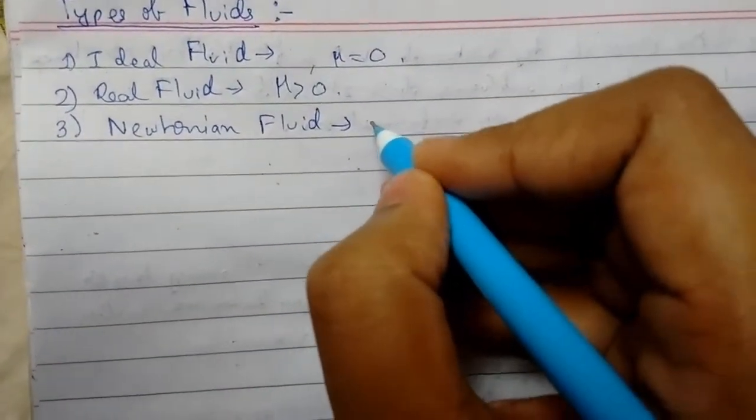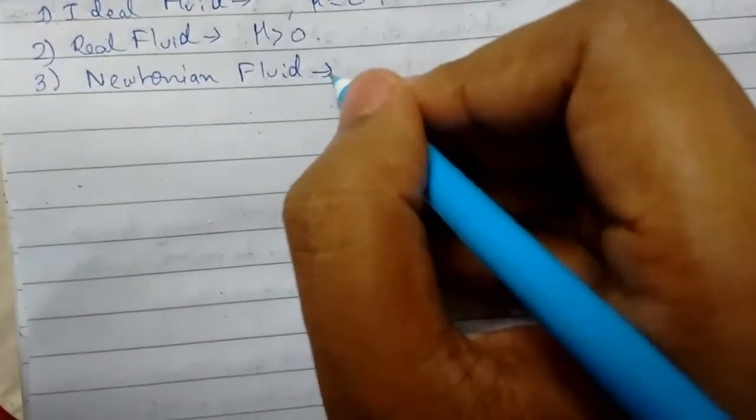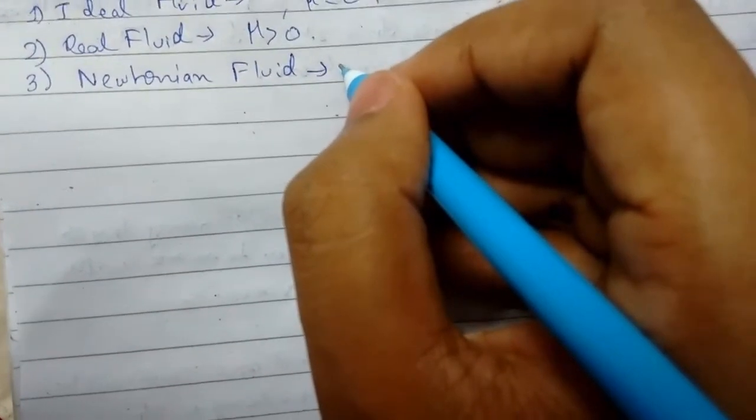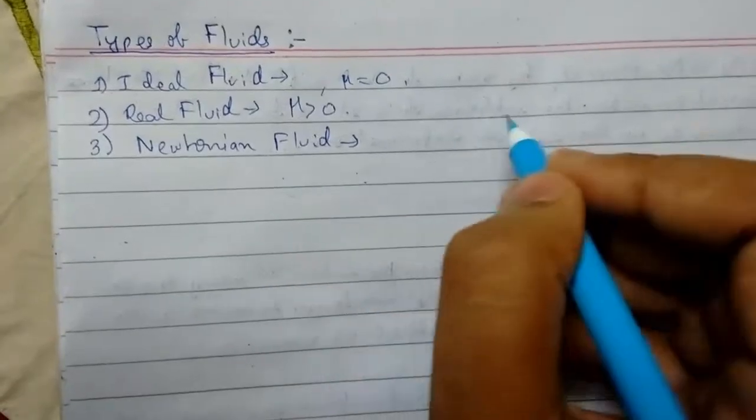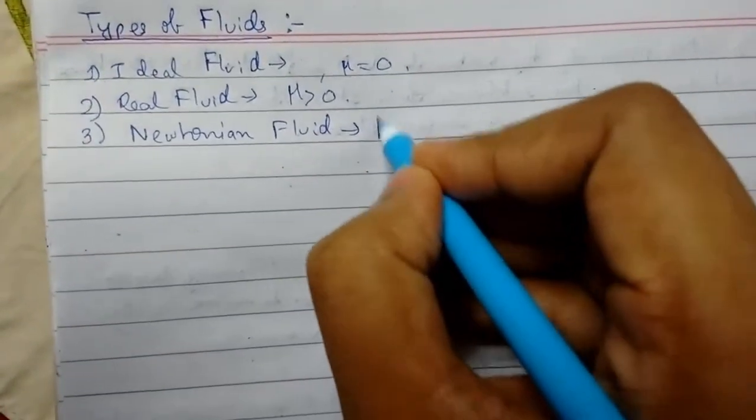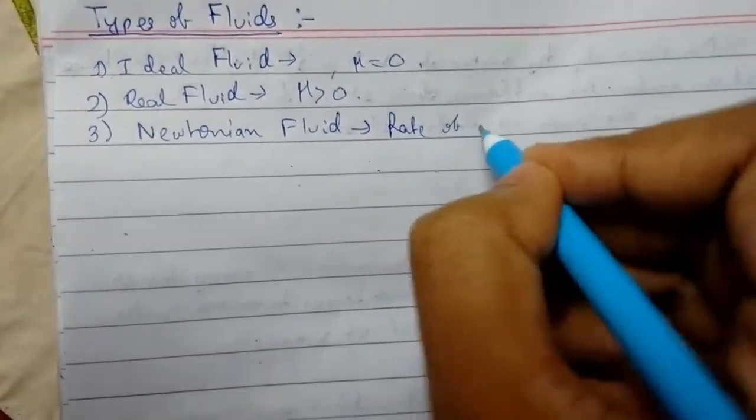Next we have Newtonian fluid. So Newtonian fluid: the fluids for which the rate of deformation is proportional to the shear stress are called Newtonian fluid. So rate of deformation proportional to shear stress is Newtonian fluid.